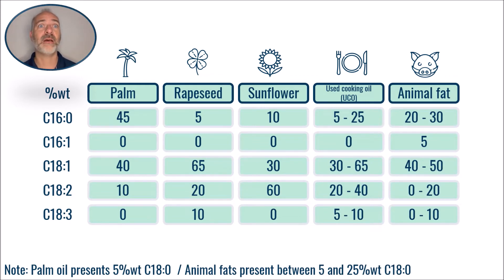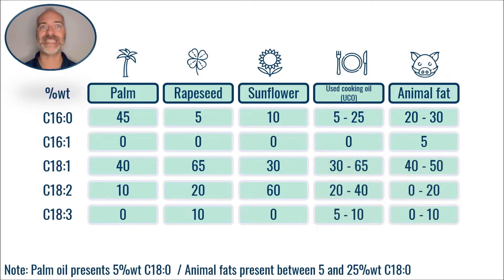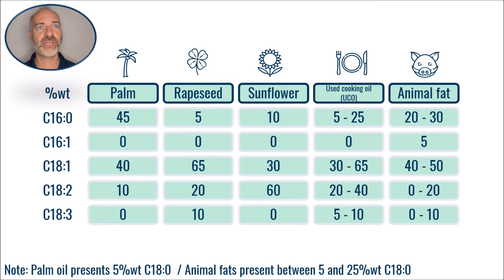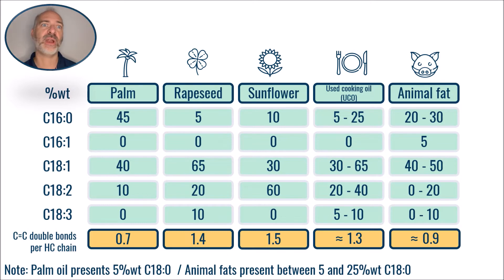Thus, animal fats are mainly made up of C18, while used cooking oils also have a significant presence of C18, with a proportion of C16 that can go up to 25 weight percent. In terms of unsaturation, we see that used cooking oils compare quite well to rapeseed, while animal fats have more C16 saturated chains. These unsaturations will have a direct influence on the hydrogen consumption in the downstream process.